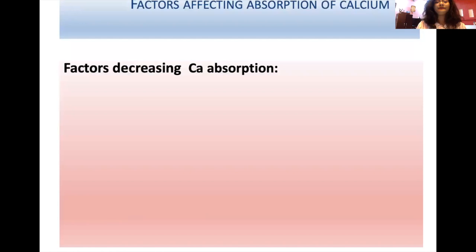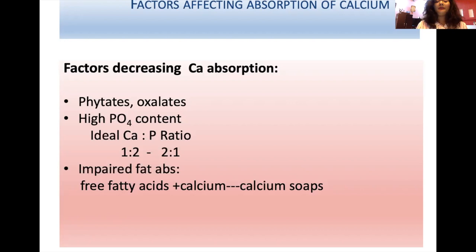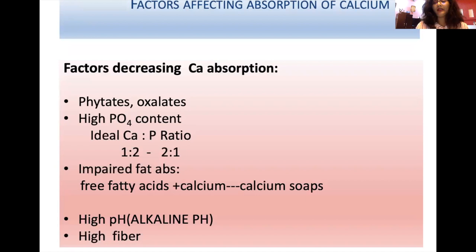Factors decreasing calcium absorption include phytate and oxalate — obtained through vegetables and fruits — which form insoluble salts with calcium. High phosphate content may also decrease calcium absorption; the ideal calcium-to-phosphorus ratio in diet should lie between 1:2 and 2:1. In malabsorption syndrome with impaired fat absorption, free fatty acids form insoluble calcium soaps. High alkaline pH and high fiber diet also decrease calcium absorption from the intestine.